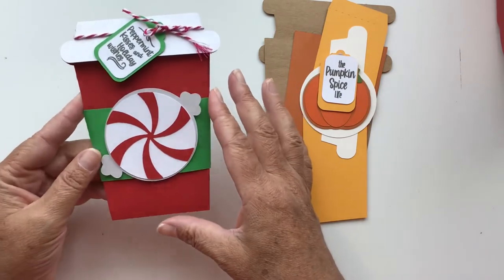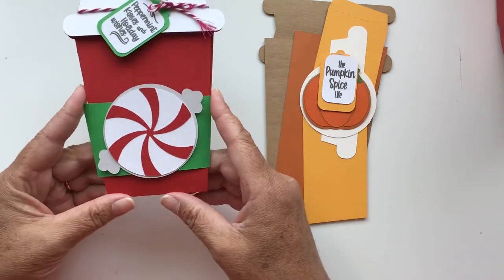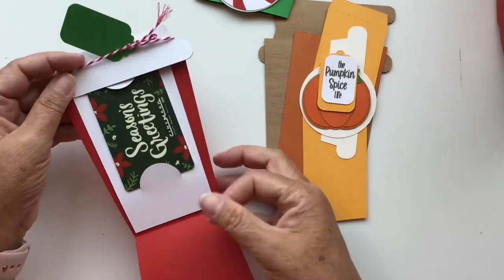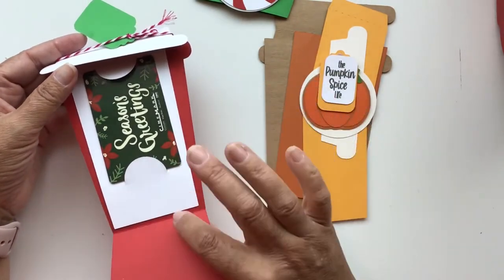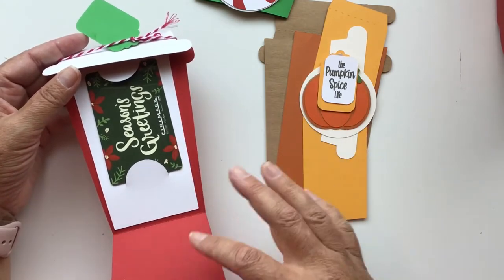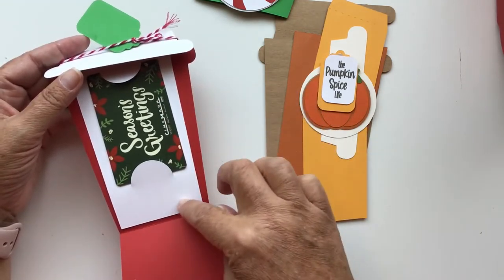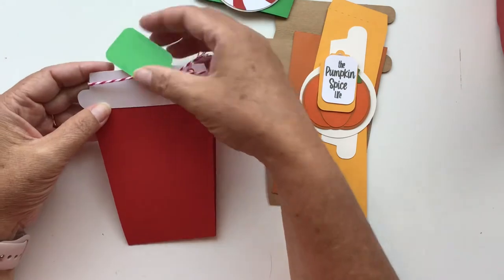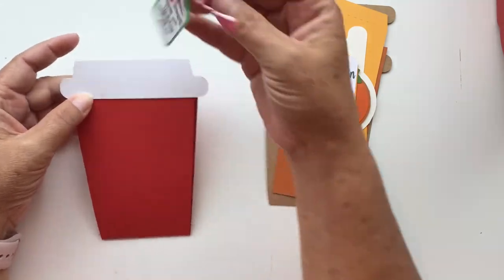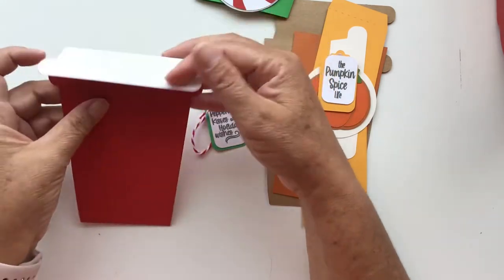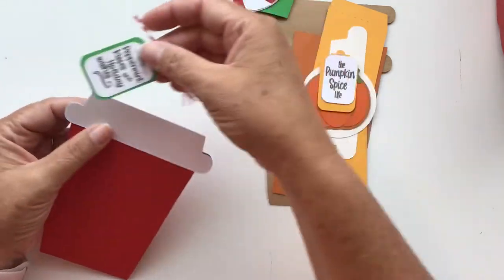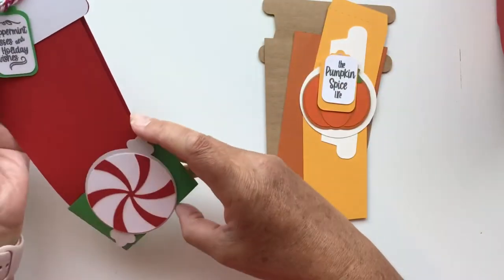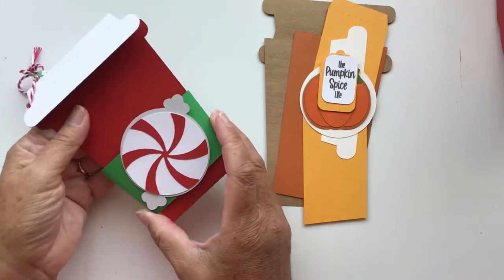When you open this you can slide the belly band off. When you open the card it has a gift card holder that's optional, so you can put a gift card in here or leave it out and just do a little letter or greeting. The tag is also removable, I've just tied it on with some jute or baker's twine. The belly band slides back on to keep it closed.